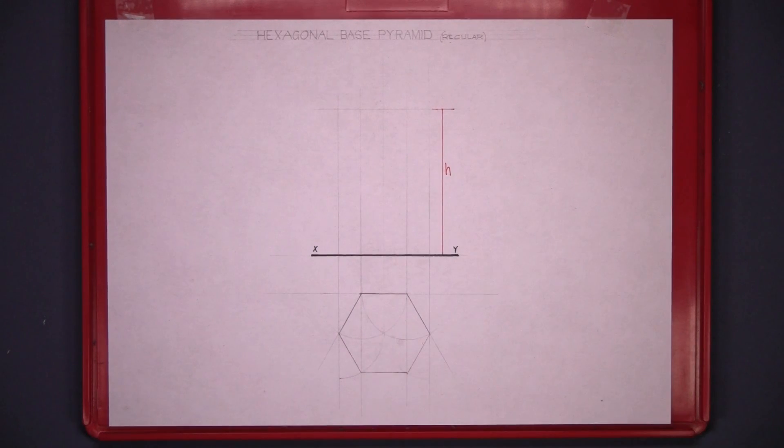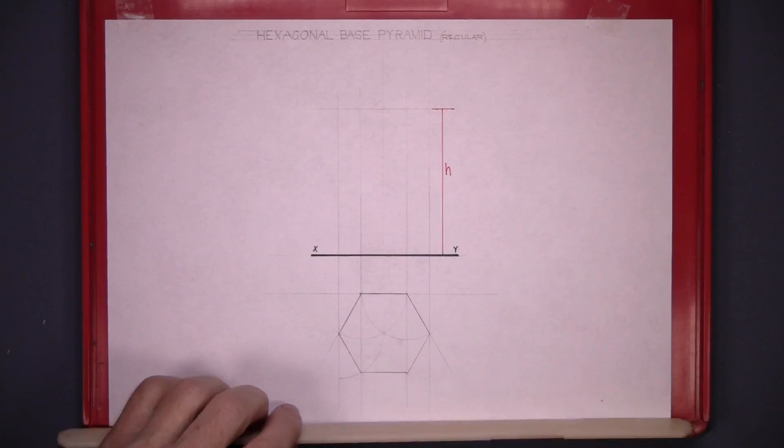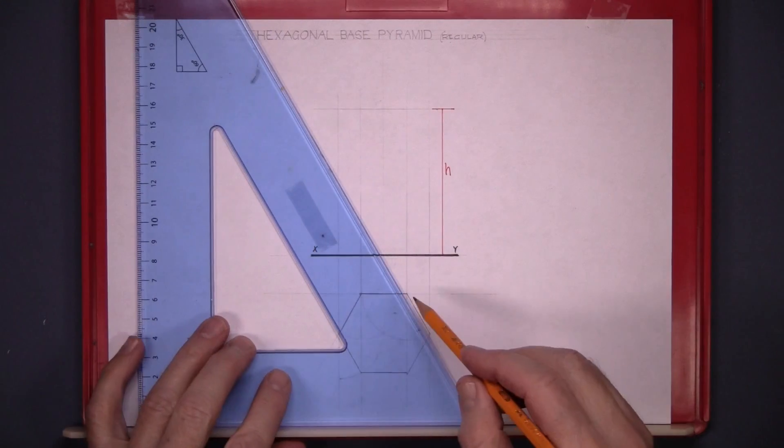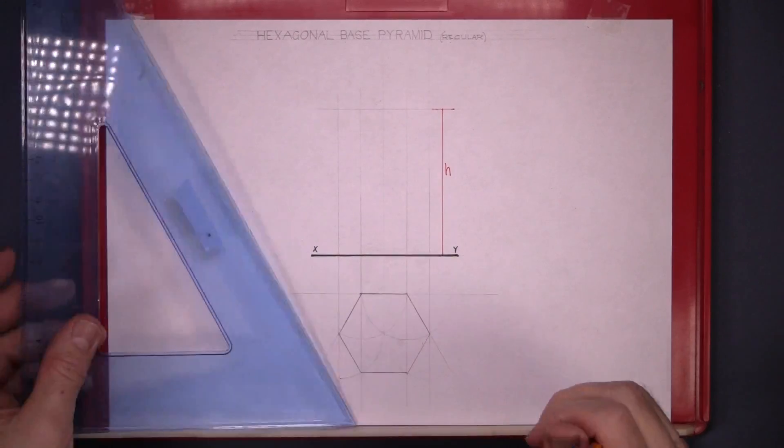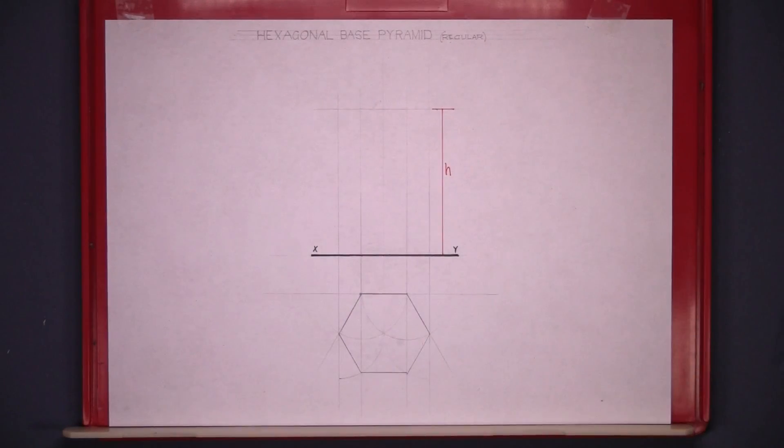To draw this hexagon we just use a 60 degree set square and that gets us those lines and then got it drawn.